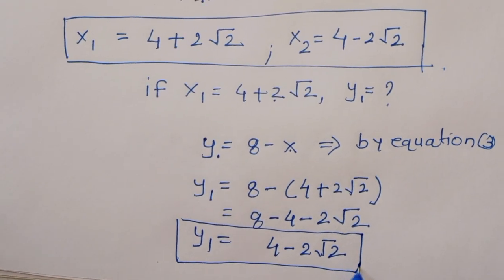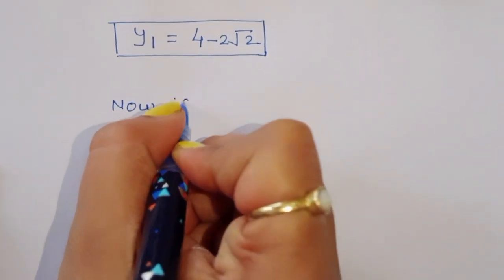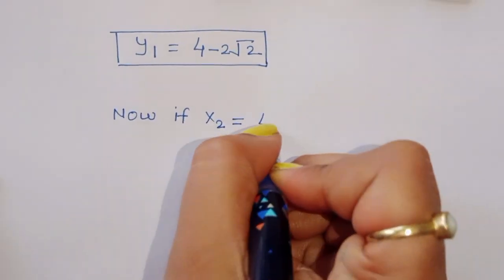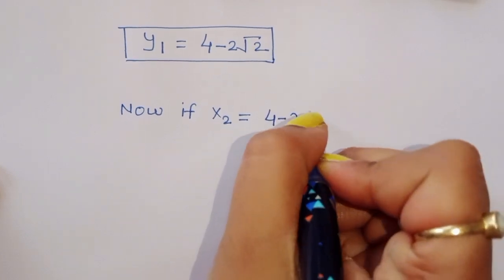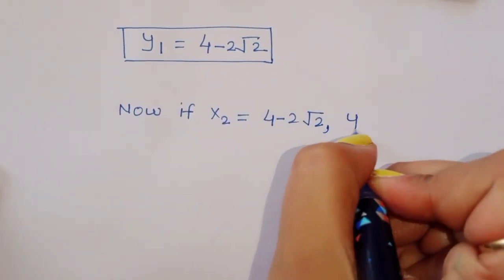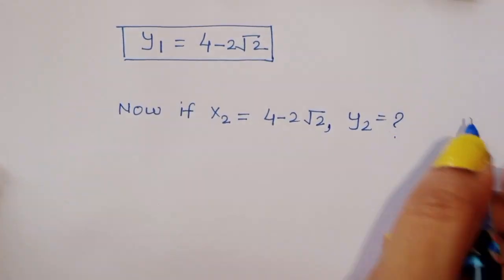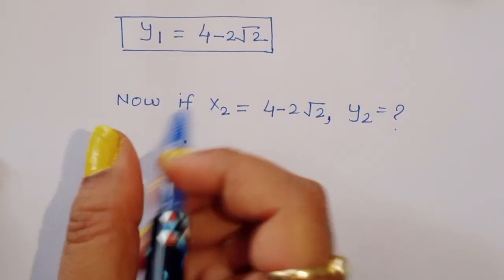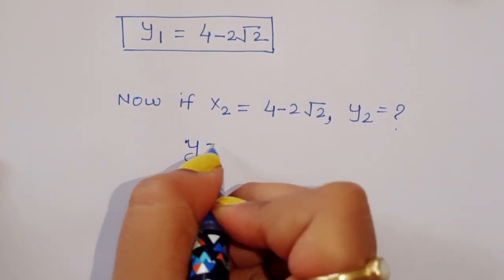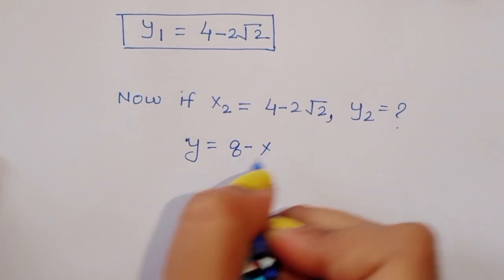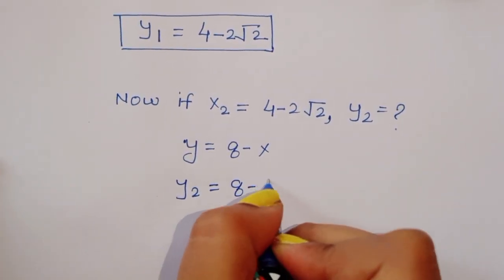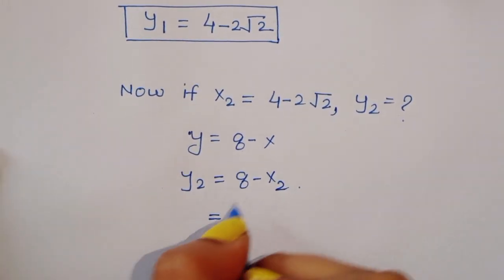Now let's find y2. If x2 is equal to 4 minus 2 root 2, then we use equation 3: y is equal to 8 minus x, so y2 is equal to 8 minus x2.